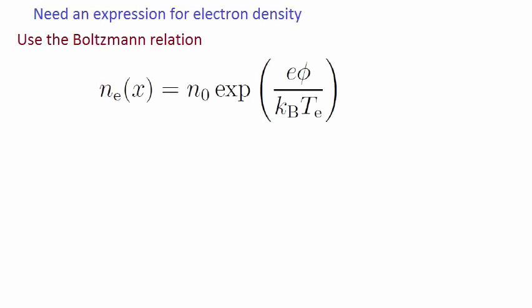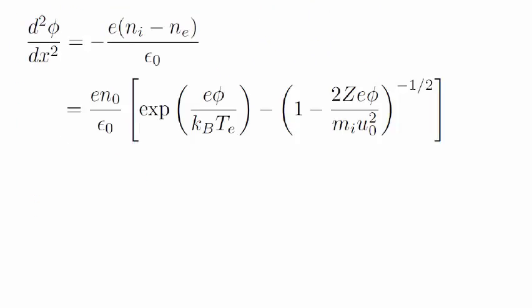For this, we use the Boltzmann relation. Since now we have Ni and Ne, we substitute them back into the Poisson equation, which results in the following.